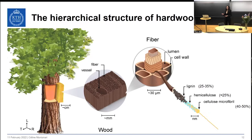The vessels can be up to several hundred microns wide and are open-ended channels for water conduction. The cell wall is layered and consists of oriented cellulose microfibrils assembled at the nanoscale in a matrix of hemicellulose and lignin. Wood also has a hierarchical porous structure with microscale pore space in the lumen, the center of the wood cell, as well as nanoscale porosity in the cell wall.